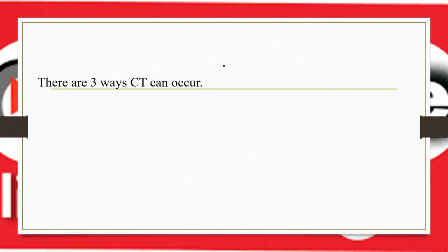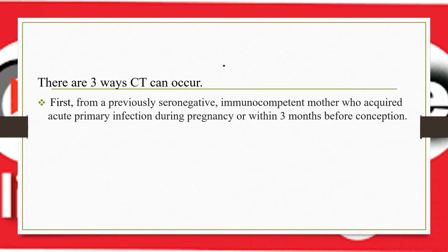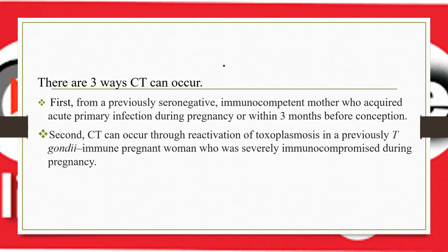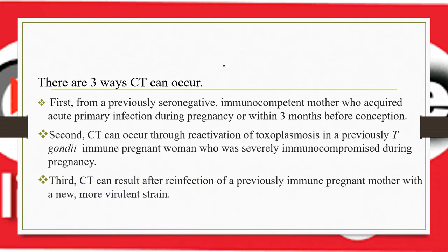There are three mechanisms of congenital toxoplasmosis: first, transmission from a previously seronegative immunocompetent mother who acquires primary infection during pregnancy or within three months before conception; second, reactivation in a previously immune pregnant woman who becomes severely immunocompromised; third, reinfection of a previously immune pregnant mother with a new, more virulent strain — for example, after travel to areas where atypical strains predominate or after eating undercooked meat.